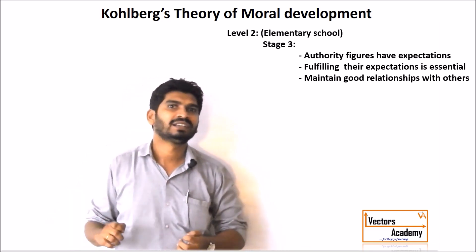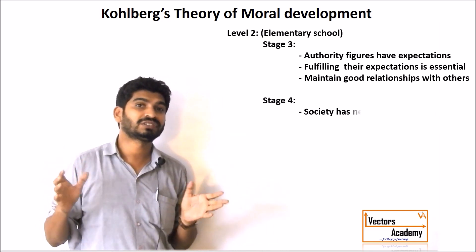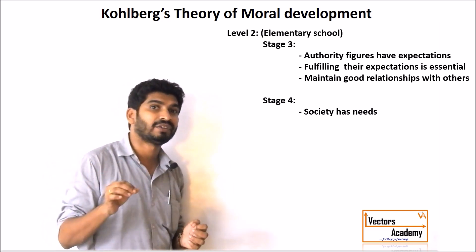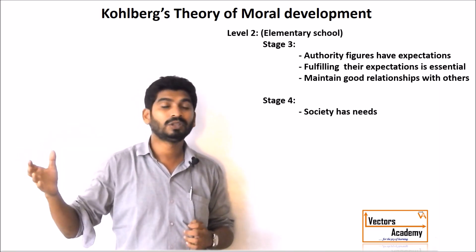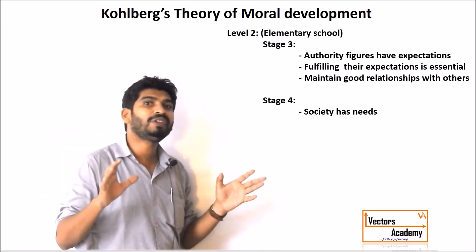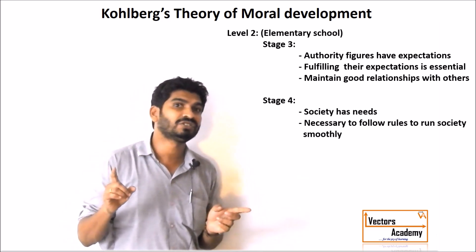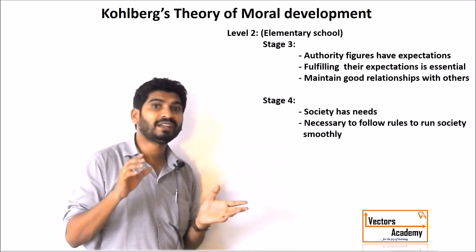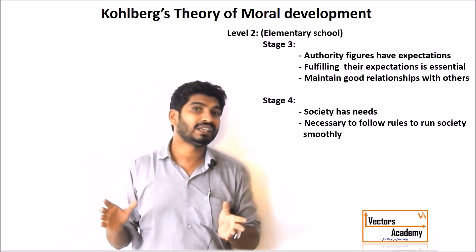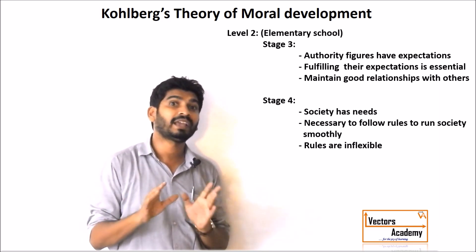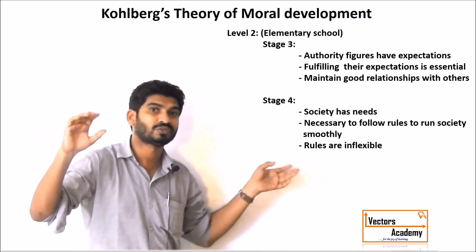In stage four, they realize it is not just the individual who has needs — it is the complete society which has certain requirements. All the people surrounding them, those they know and those they don't, everyone has needs. That is when they realize rules are very essential for the society to run smoothly, and they believe that the rules are inflexible and cannot be modified. This is where the development of most people stops.